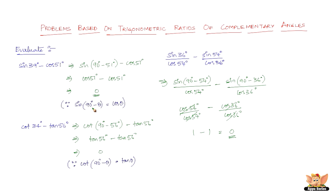The reason again follows from sine of 90 minus theta equals cos theta. These are a set of very simple problems — you just have to remember the relations of the trigonometric ratios of the complementary angles, and that's all. You can solve these problems very easily. Let's solve more problems in the forthcoming videos.